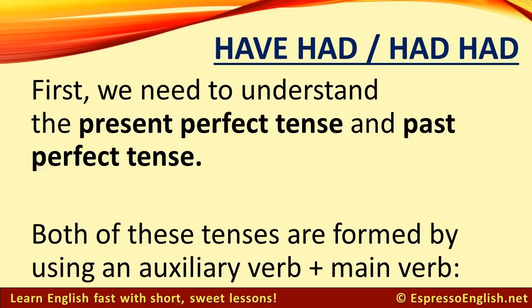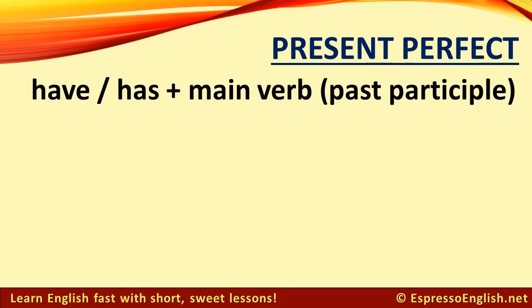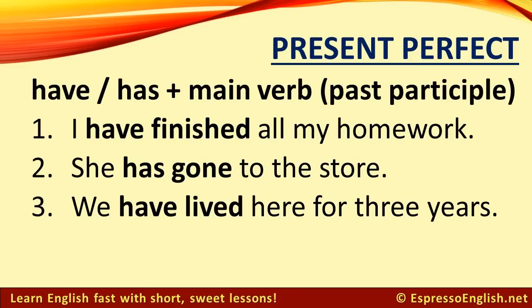Both of these tenses are formed by using an auxiliary verb plus a main verb. The present perfect is have or has plus the main verb in the past participle. For example: I have finished all my homework. She has gone to the store. We have lived here for three years.